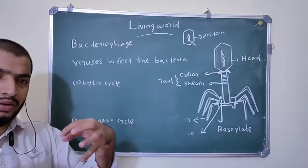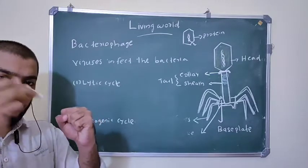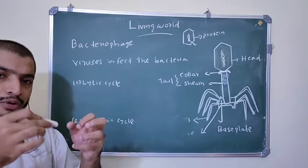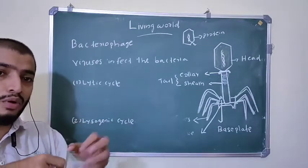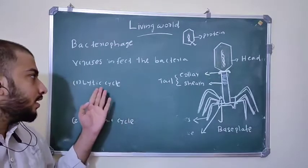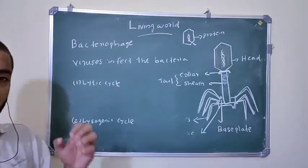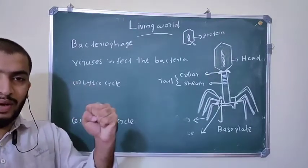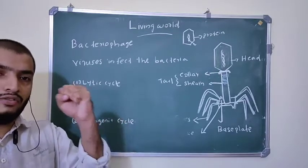Under favorable conditions, bacteriophage infect the bacteria, produce copies, infect newly formed bacteria, and produce more copies — following the lytic cycle. In the lysogenic cycle, bacteriophage infect bacteria that are living in unfavorable conditions where they get less food.